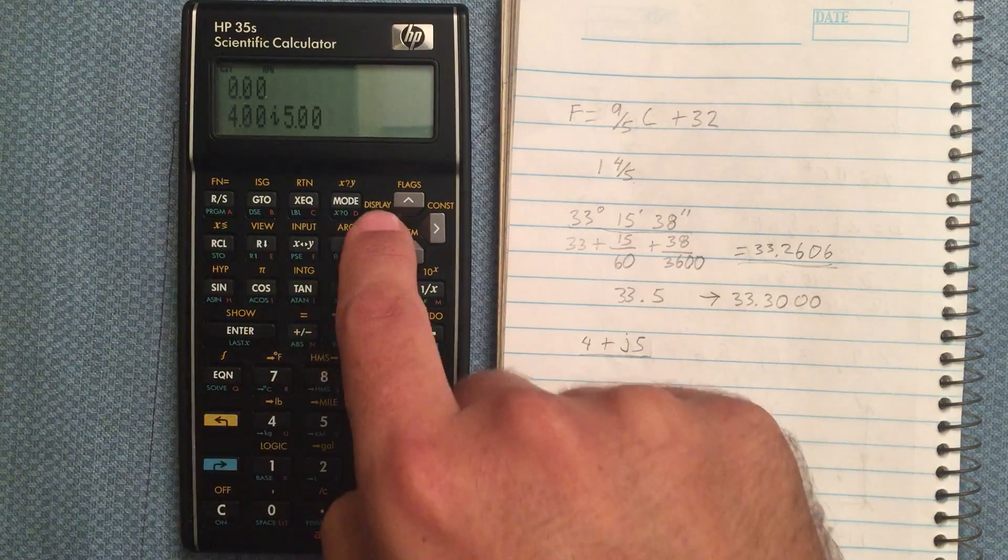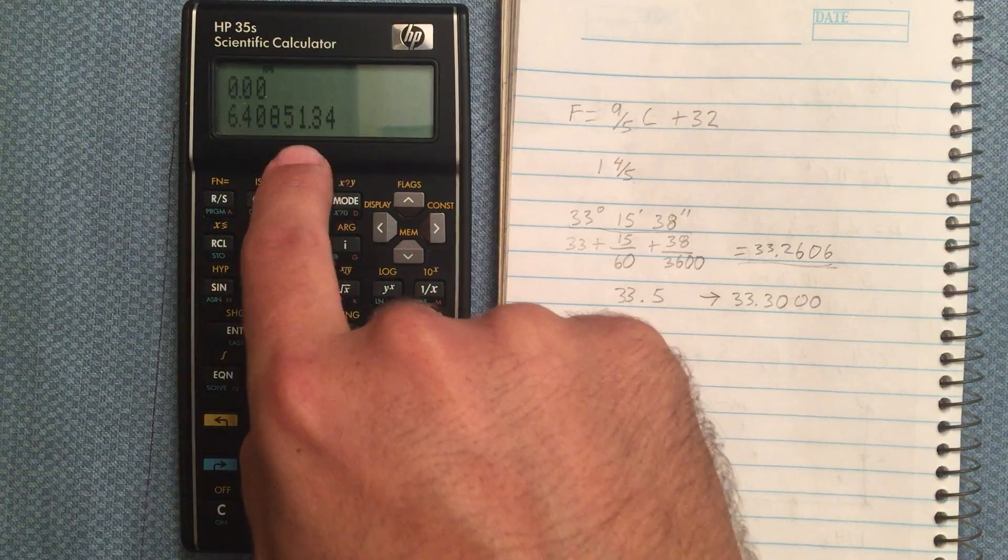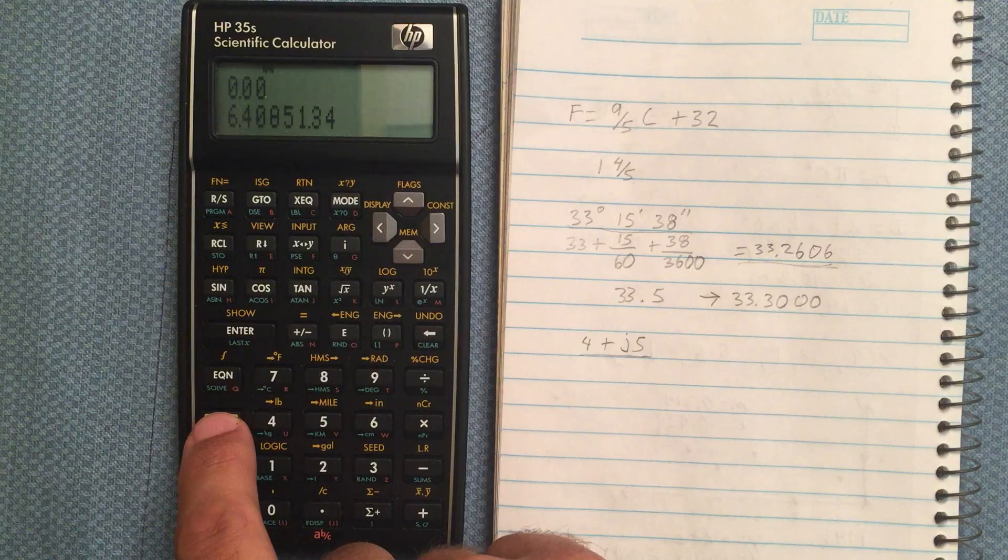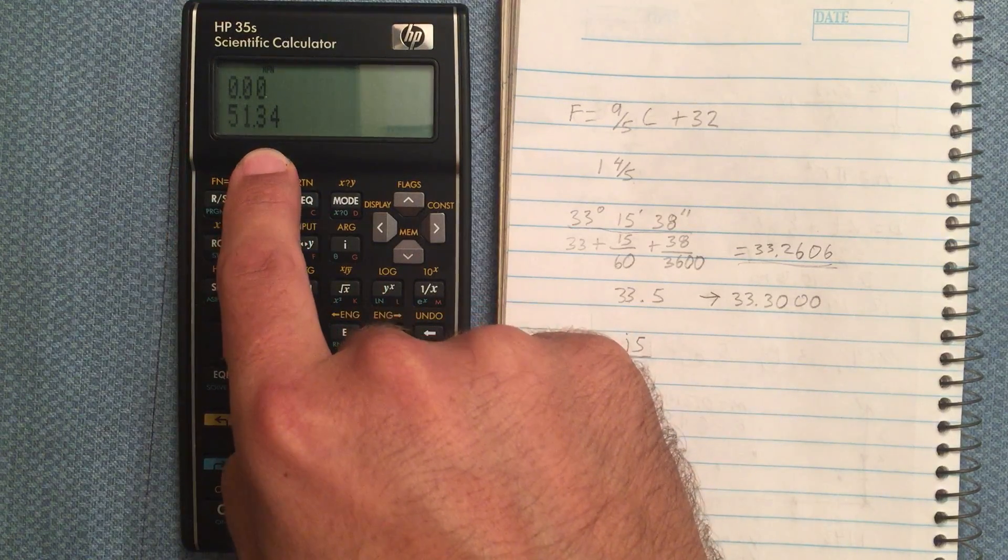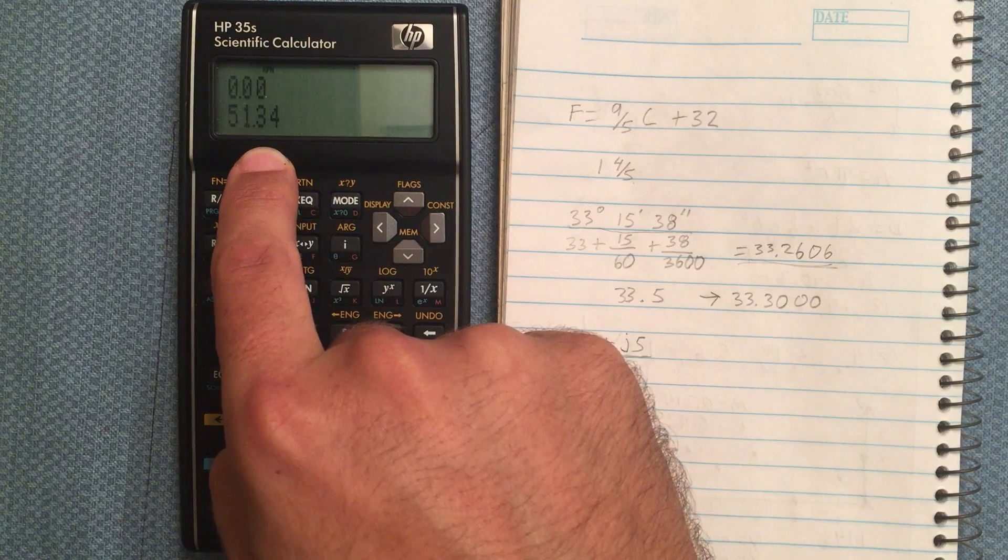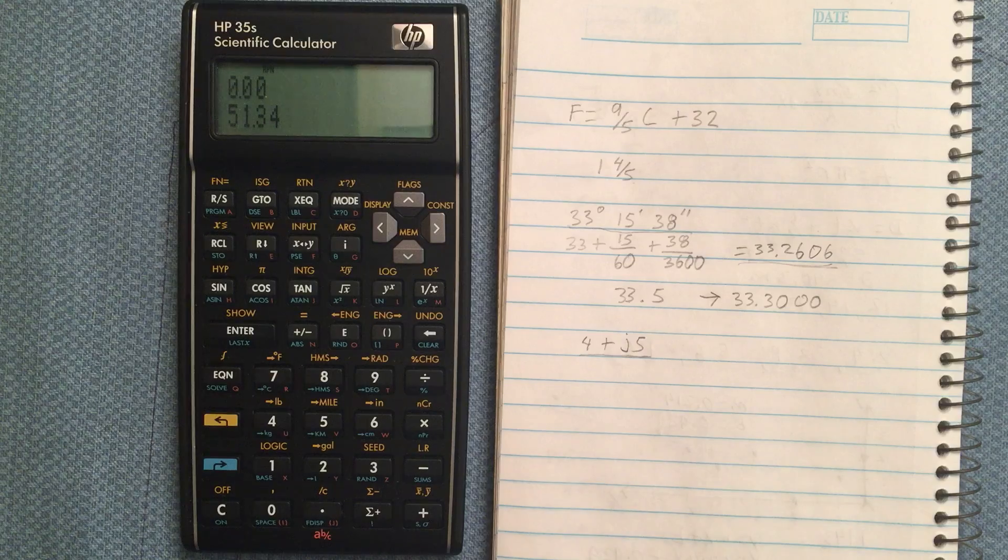Shift this down, go back to polar. That's that 51.34 degrees that we got. Again, take the argument. That gives you the angle of the polar form of your imaginary number, or your complex number.